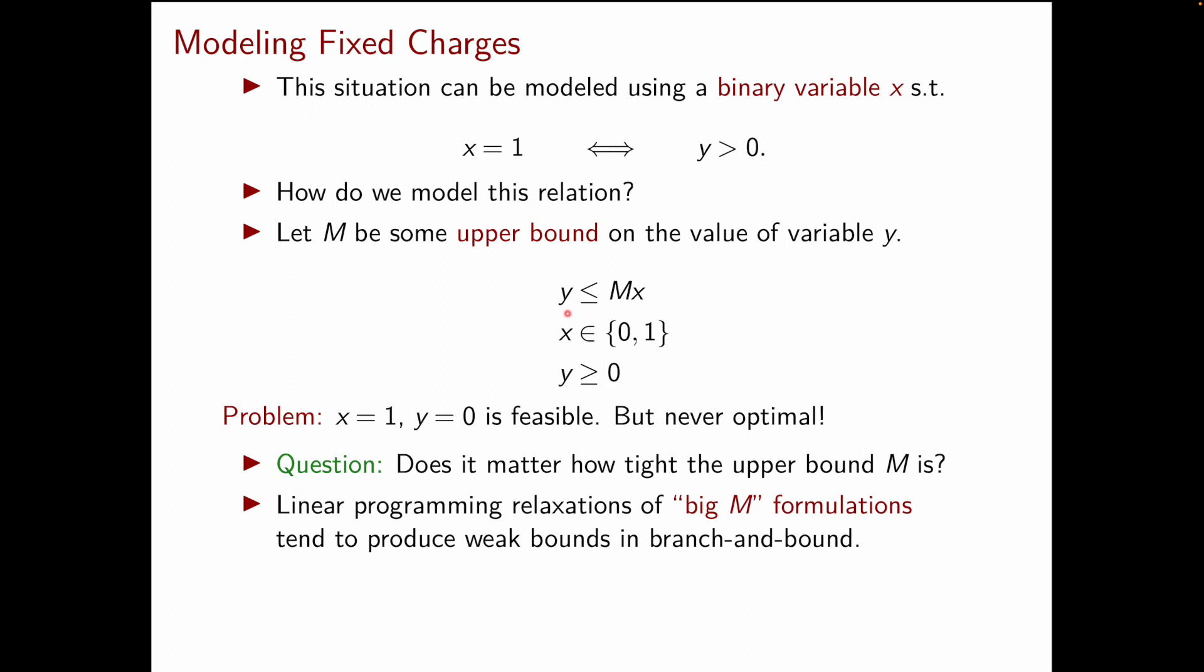Intuitively you can just look at the feasible region defined by this inequality alone. This inequality only involves two variables so you can visualize it in the plane. Now the smaller capital M is the smaller the set of non-negative points that satisfy this condition will be.